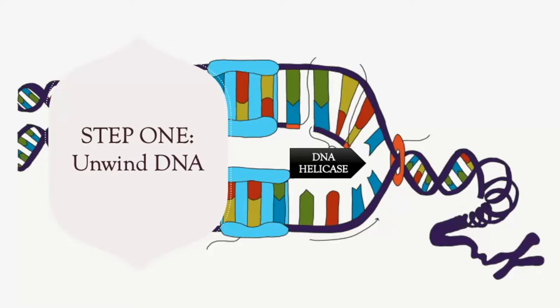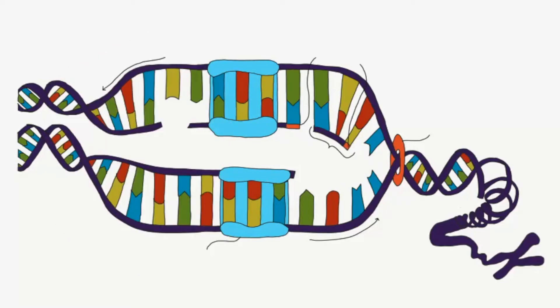Once the strands are separated and unwound they move to the next step which is replicating the DNA. The two original strands are called the parent strands and the new created strands are called the complementary strands due to complementing the parent strands. The enzyme that identifies the nucleotide and matches it to the appropriate complementary nucleotide is called DNA polymerase.